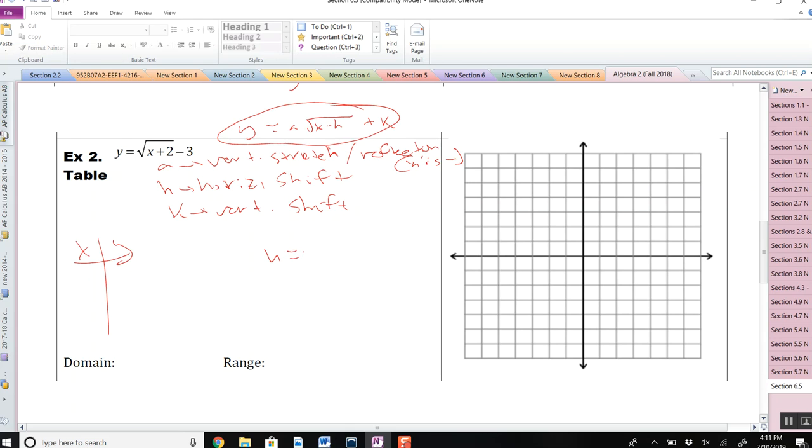Well, we see that our h is negative 2. Our k is negative 3. This means we're going to subtract x by 2. This means we're going to subtract y by 3. So the parent function, again, it's always nice to kind of have it out there for us. 0, 1, 4. 0, 1, 2. So I need to take 2 away from the x values. So negative 2, negative 1, and 2. Take 3 away from the y values. And plot the points. And there's our graph.